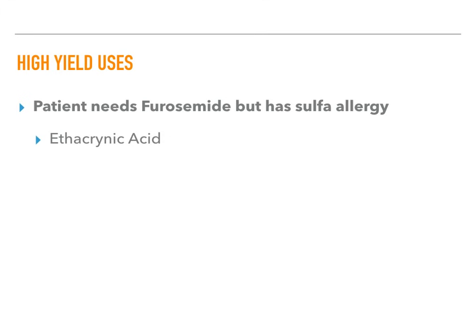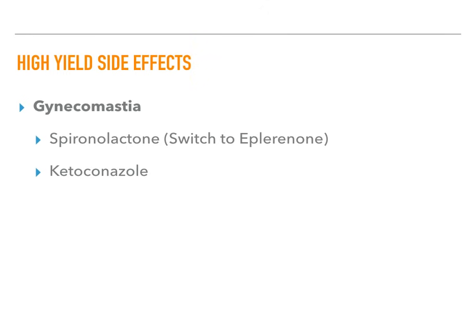The two highest-yield drugs that cause gynecomastia are spironolactone and ketoconazole. For spironolactone, switch the patient to eplerenone — you can keep blocking the aldosterone receptor without causing gynecomastia. Ketoconazole is a mainstay antifungal treatment. Be aware that question stems may try to make you think the patient is abusing anabolic steroids, but they may just be on one of these routine drugs.